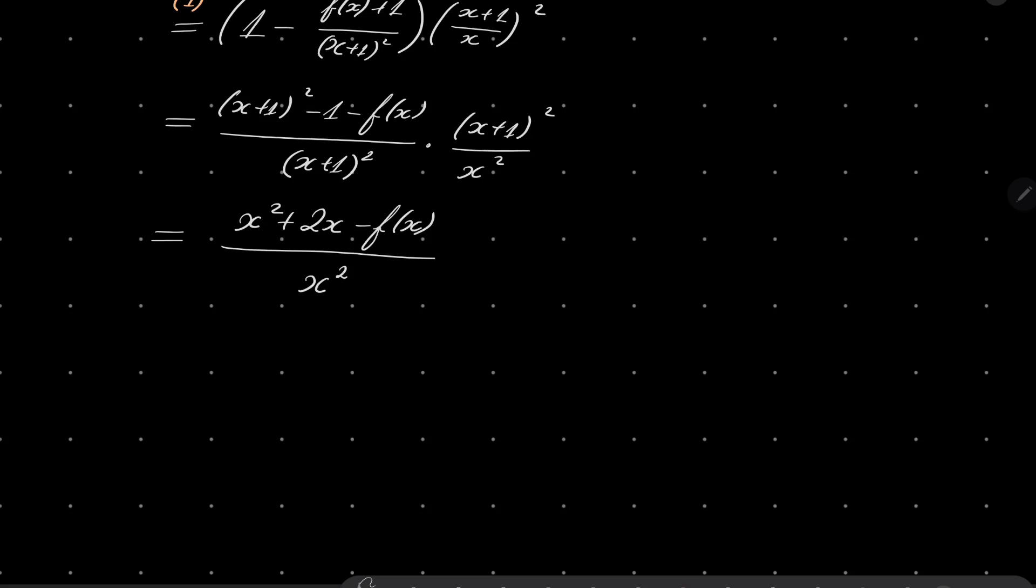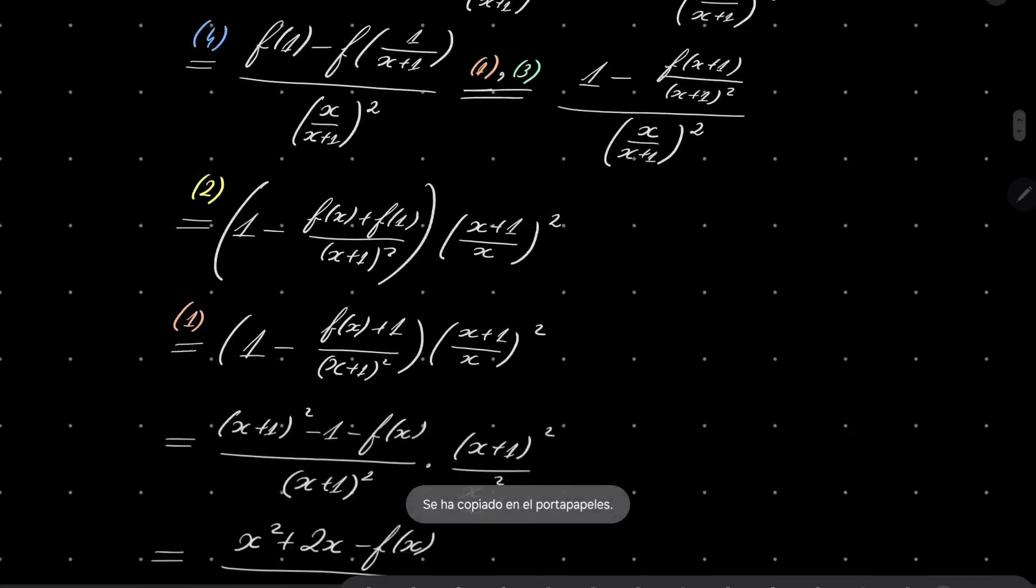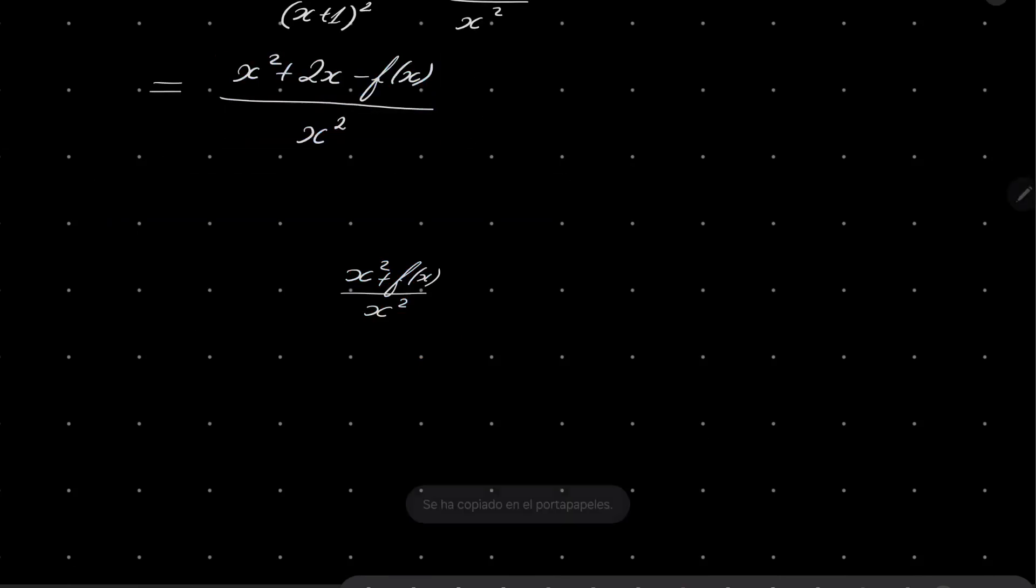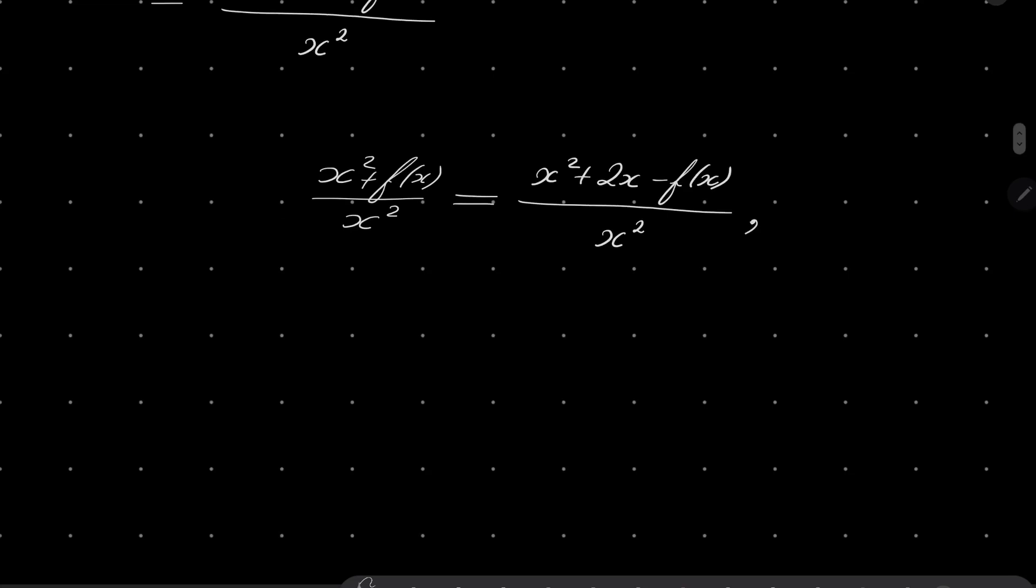And after simplifications, we'll have (x² + 2x - f(x))/x². Alright, and now let's recall that we have written the very same expression in two different ways. So it's both this expression and this expression. They describe the very same quantity, so they are equal. They are equal and after solving this, very easily, we show that for every real number apart from -1 and 0, f(x) = x.